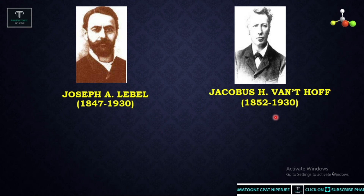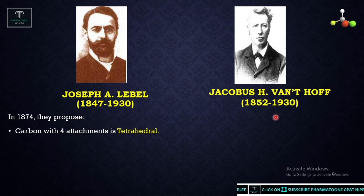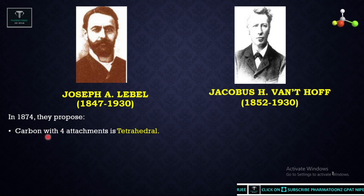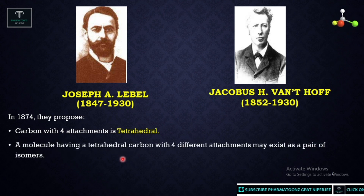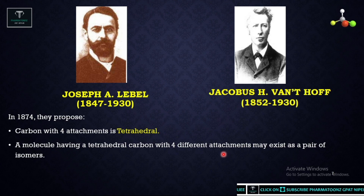Then there was a contribution from two scientists: Joseph Le Bel and Jacobus H. van't Hoff. Both proposed that a carbon with four attachments is called a tetrahedral carbon, and a molecule having a tetrahedral carbon with four different groups may exist as a pair of isomers — that is, enantiomers.